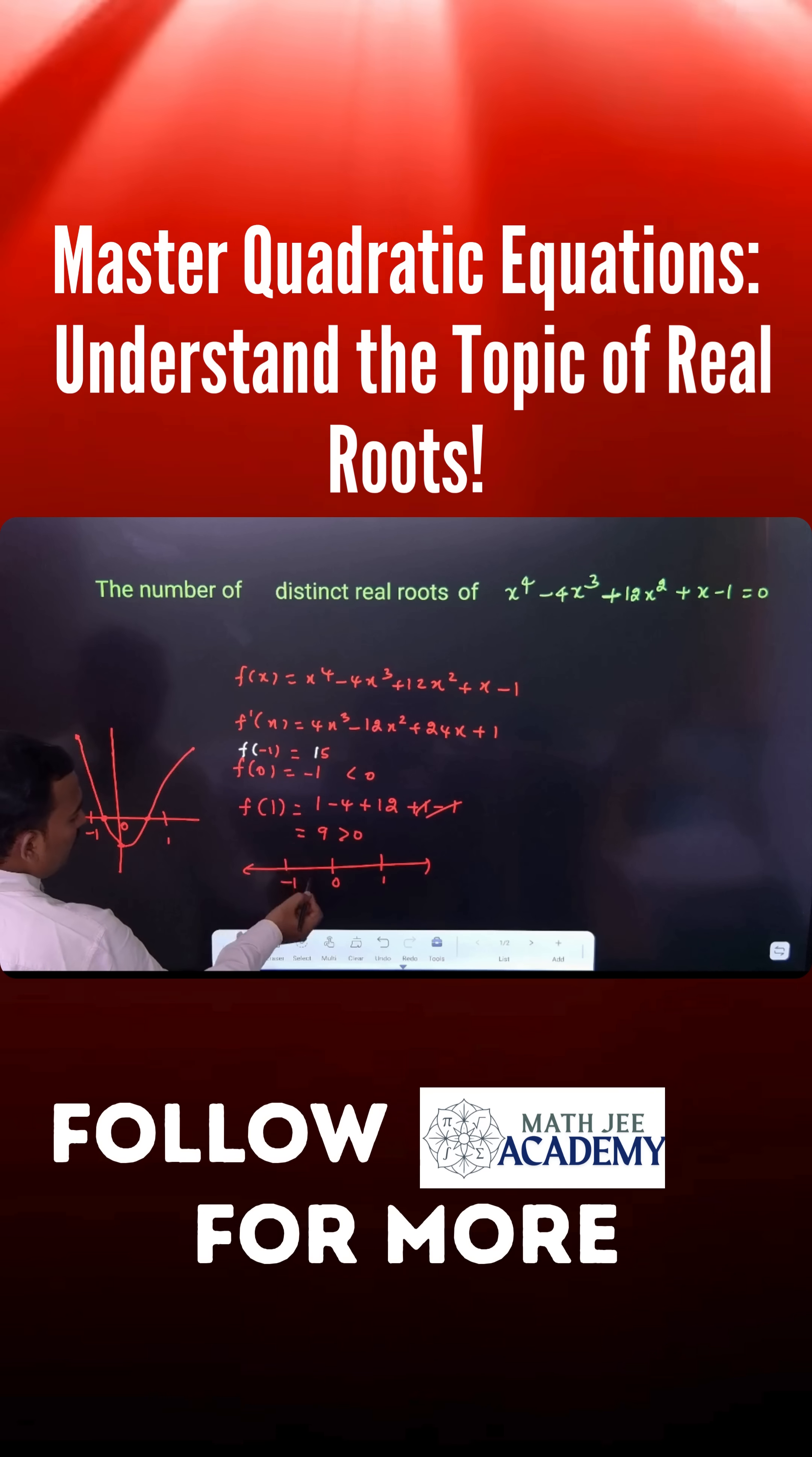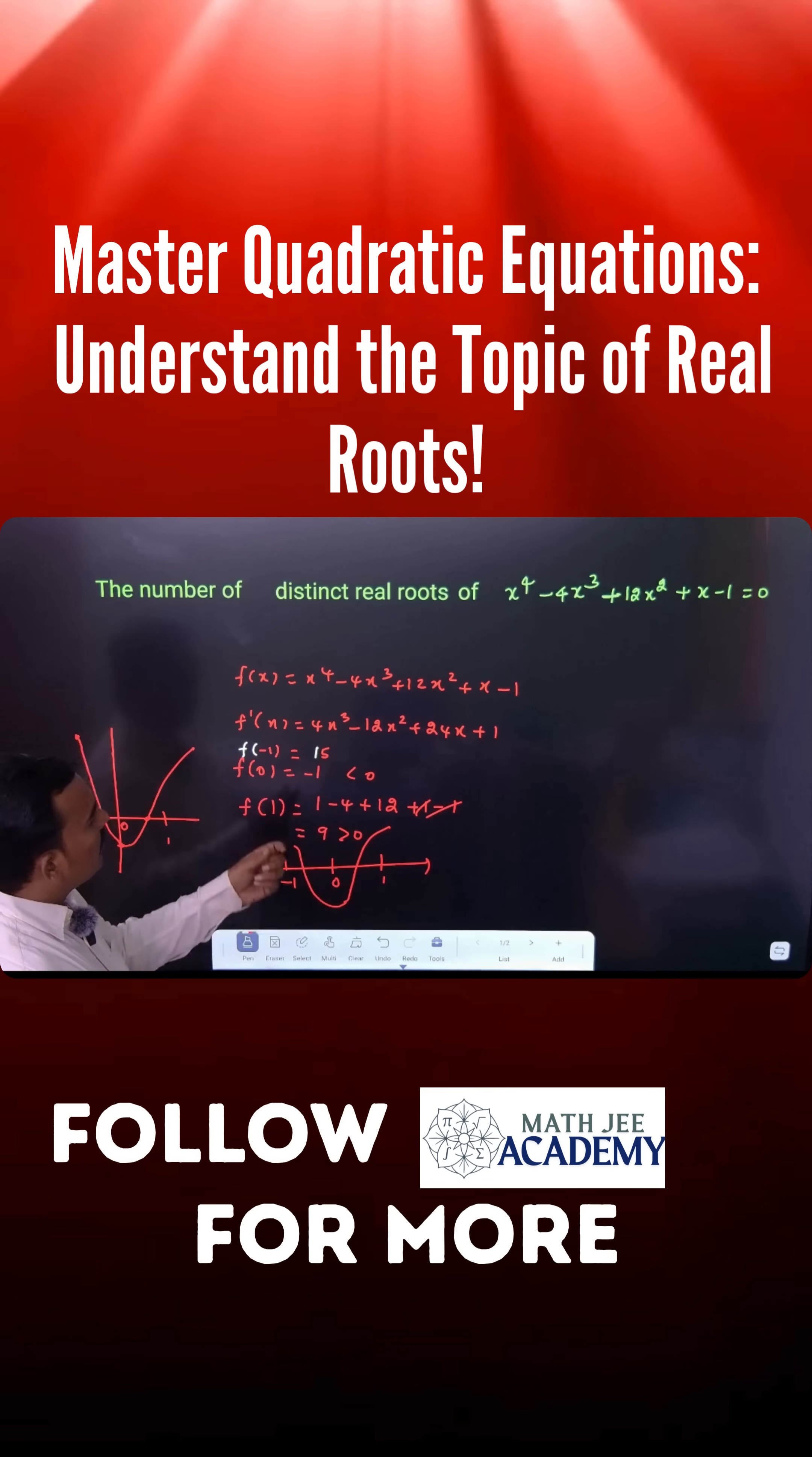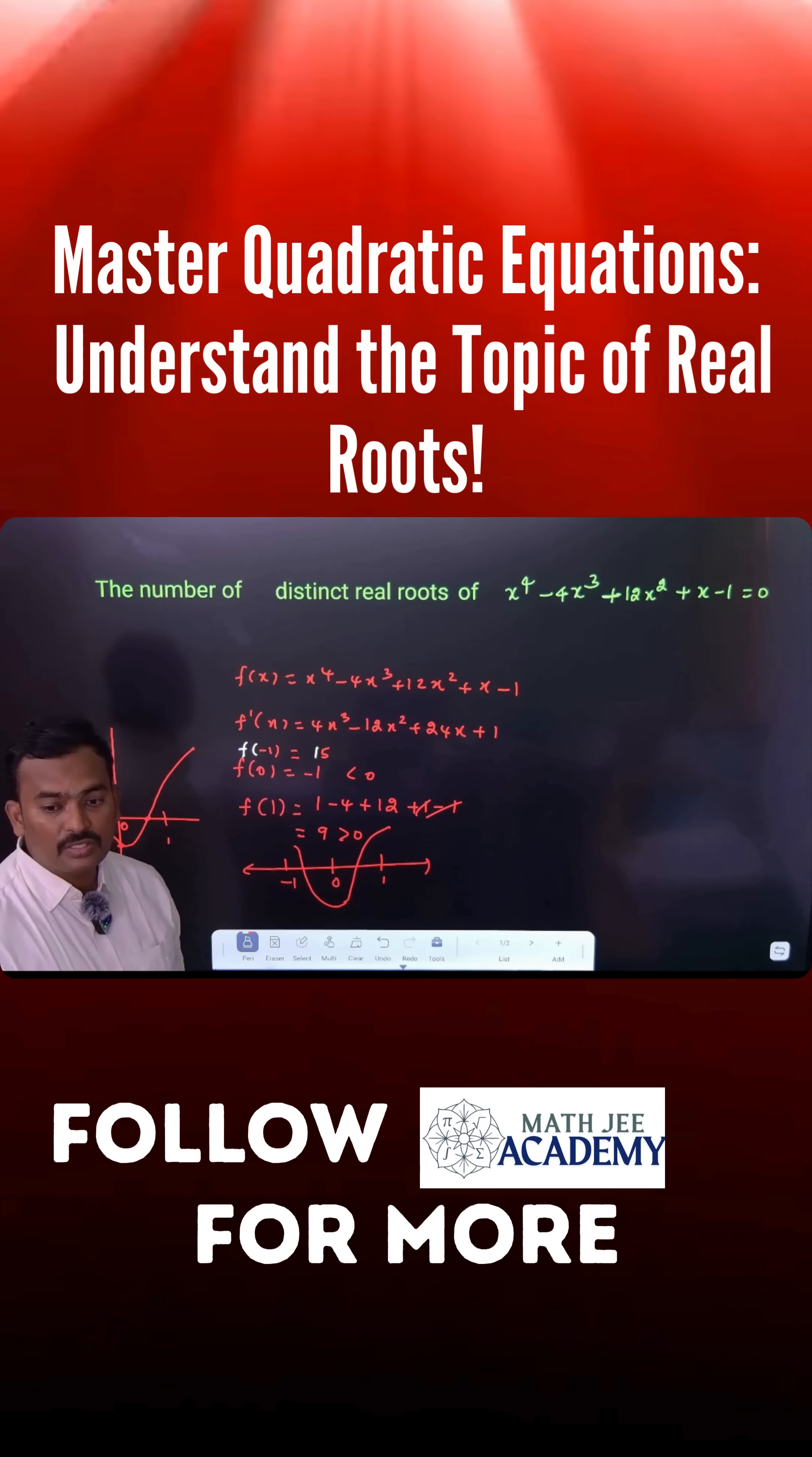Therefore, we can find one root in -1 to 0 and one more root in 0 to 1. If you take more than 1, it will be an increasing function greater than 0. Therefore, there are two distinct real solutions possible.